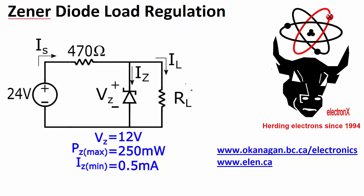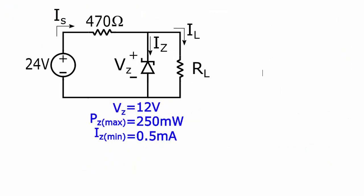And in this case, what load regulation is, is the range of values that my load can be. In this case, it's just a resistive load. What is the range of resistor values that can be put there that will still let the zener diode do its regulation properly? Now, there's, of course, going to be two extremes. RL has to be less than some maximum, and it also needs to be greater than some minimum.